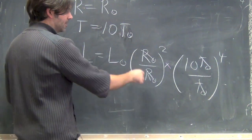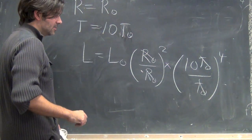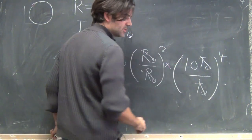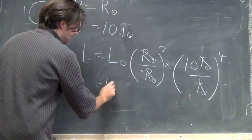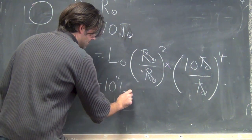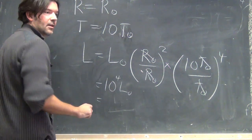So, when I plug this into the formula, the radius of the sun cancel out, the temperatures of the sun cancel out, but this 10 to the fourth power I get here is 10 to the fourth, and the L₀, which is, of course,